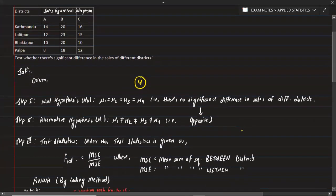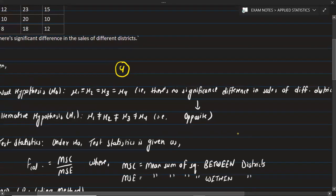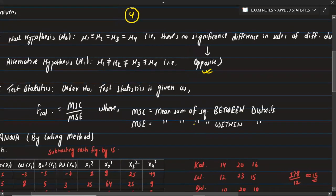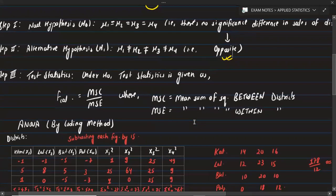Step 1 — Null hypothesis: mu1 = mu2 = mu3 = mu4. There is no significant difference in the sales of different districts. Alternative hypothesis: the means are not all equal, meaning there is a significant difference.